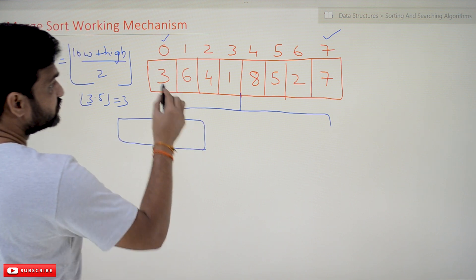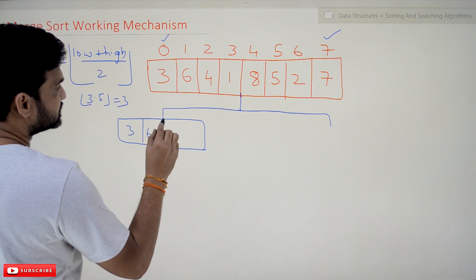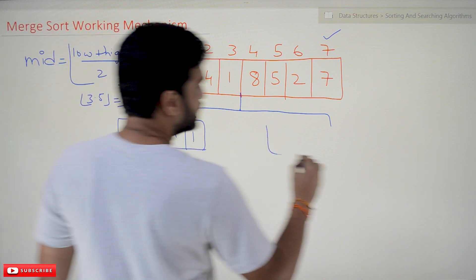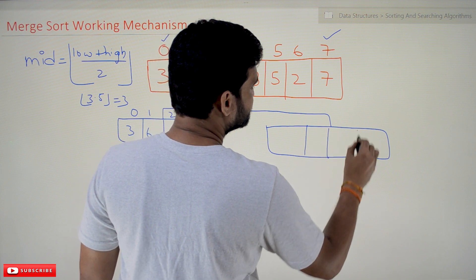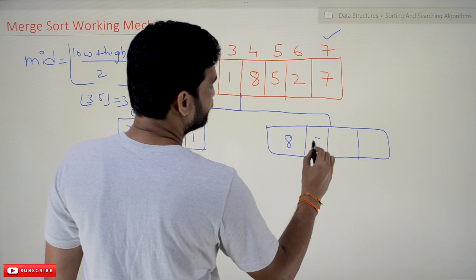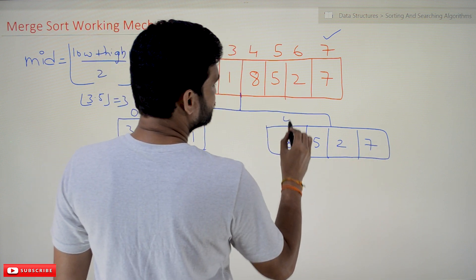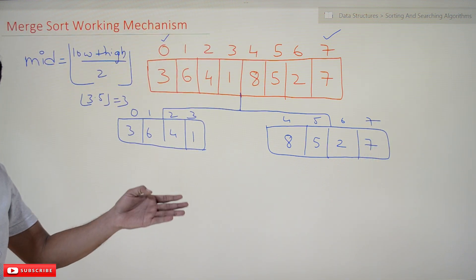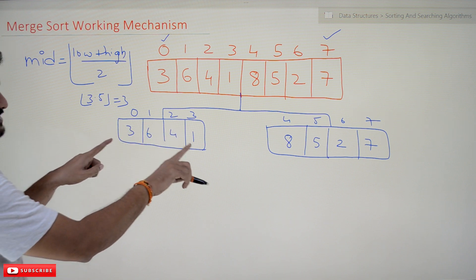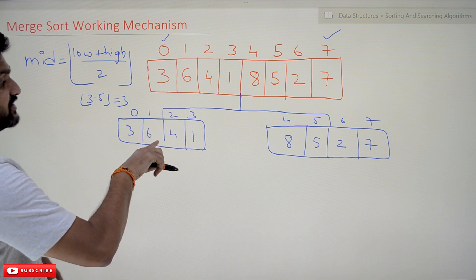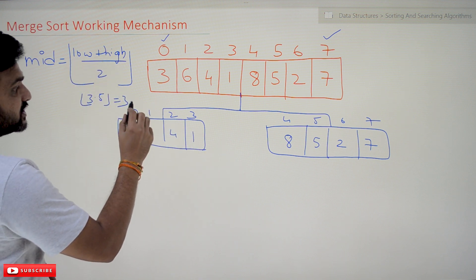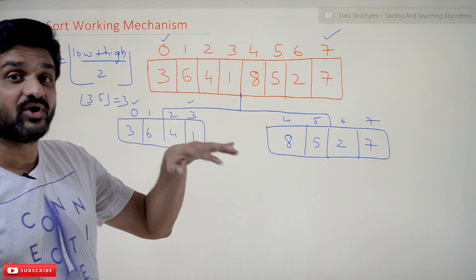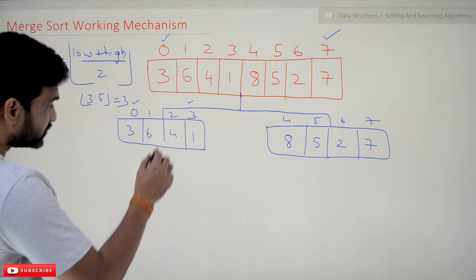The first sub-problem contains values 3, 6, 4, 1 at indices 0 to 3, and the second sub-problem contains values 8, 5, 2, 7 at indices 4 to 7. Can this sub-problem be further divided? Yes. For the left sub-problem: mid = floor((0 + 3) / 2) = floor(1.5) = 1. So the division is made at index 1.